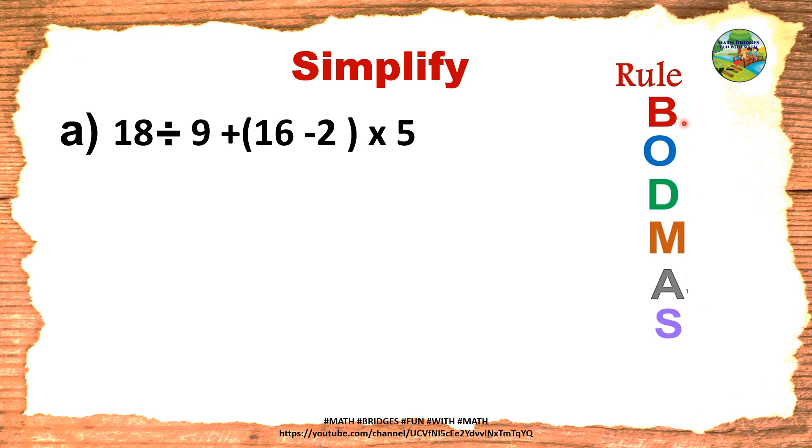First bracket, step by step we will see how to go on. Write it on the side: B, O, D, M, A, S. First check for B brackets. Is there any brackets in the equation? Yes, here. So underline that part. The meaning is we have to solve first only this part. Remaining we will write as it is. 18 divided by 9 plus 16 minus 2 is 14 into 5. You observe, only this part we have solved, 16 minus 2. So our brackets is over, put a tick mark.